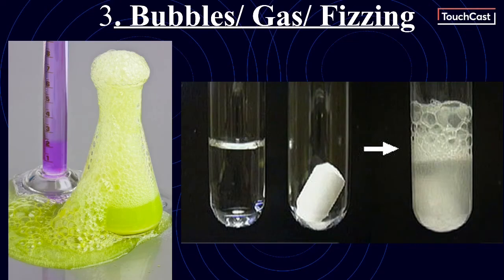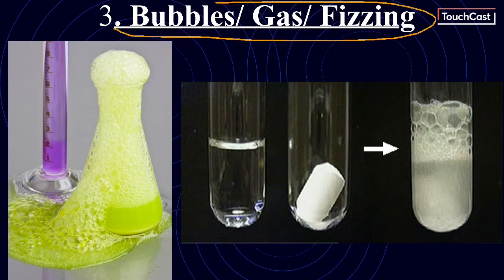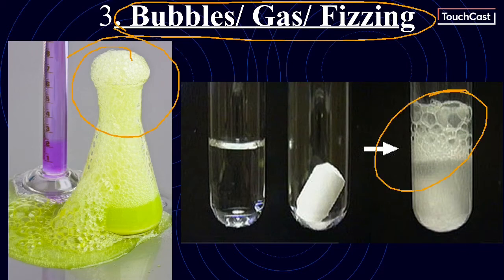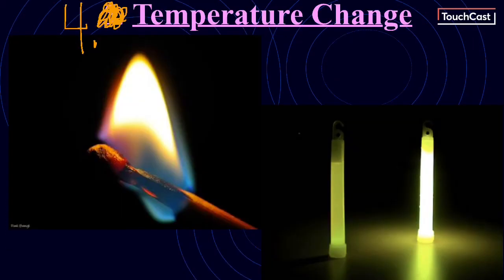Number three is going to be bubbles, gas, or fizzing. If you look at these examples, there are bubbles and some kind of fizzing going on after two things are combined — that's another example of a chemical reaction. The next thing is going to be a temperature change. Sometimes the temperature change is expected, but sometimes it's unexpected. If I pour together baking soda and vinegar, there is a temperature change that I'm really not expecting — it actually drops the temperature.